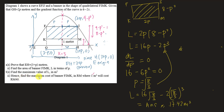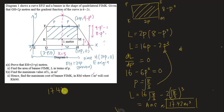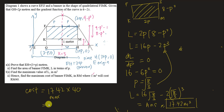Typing that into the calculator gives a maximum area of approximately 17.42 square metres. Since the question also asks for the maximum cost of the banner, and one square metre costs RM 40, we multiply: 17.42 times 40 gives a maximum cost of RM 696.80.